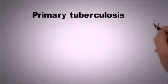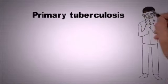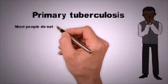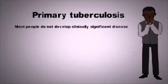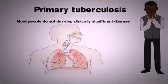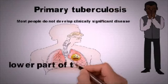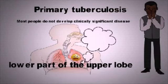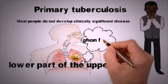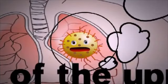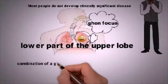Primary tuberculosis is the form of disease that occurs in previously unexposed individuals. Most people do not develop clinically significant disease. The inhaled bacillus implants in the lower part of the upper lobe and causes a focus of inflammation called the Ghon focus. The bacilli can drain to regional lymph nodes, and the combination of the Ghon focus constitutes the Ghon complex.